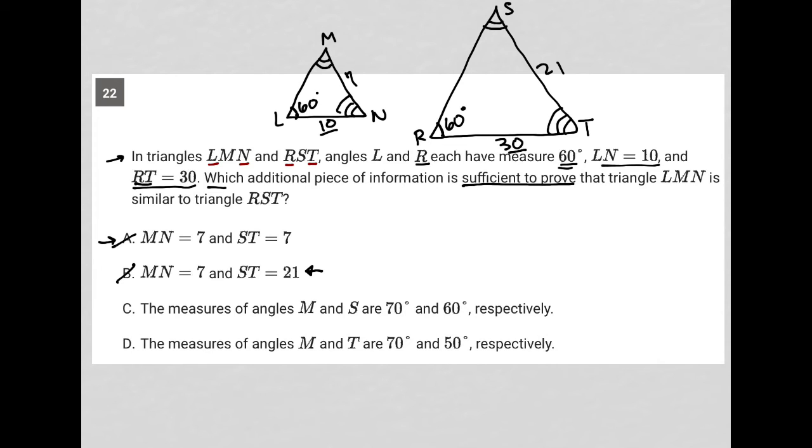Choice C, the measure... In fact, let me get rid of the 7 and 21 so there's no confusion. Choice C, the measure of angles M and S are 70 and 60, respectively.